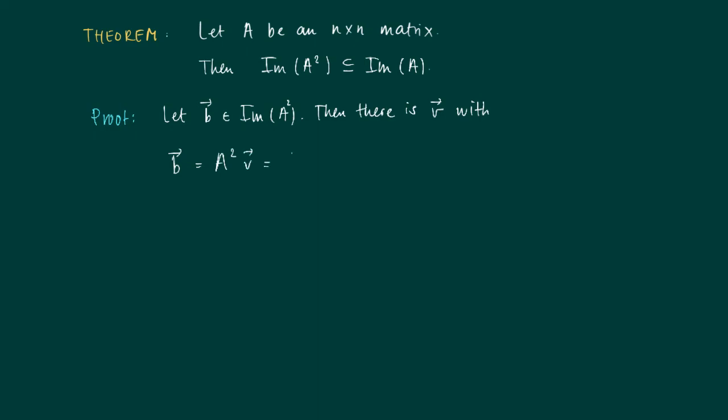And this can be written as a repeated product A times A times V, and this equals A times W, where W is just the vector we get as A times V. But then we see that actually for this vector W, B is in the image of A because A times W equals B, so it's in the image of A as well.